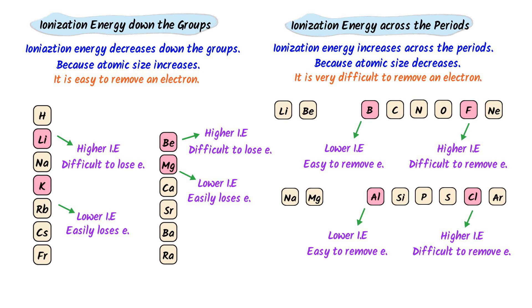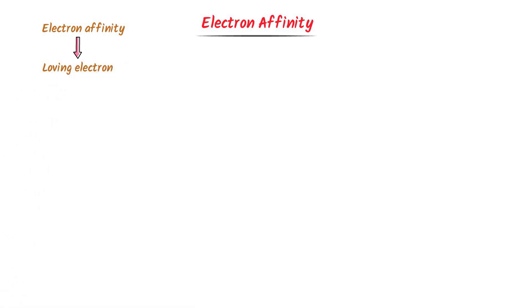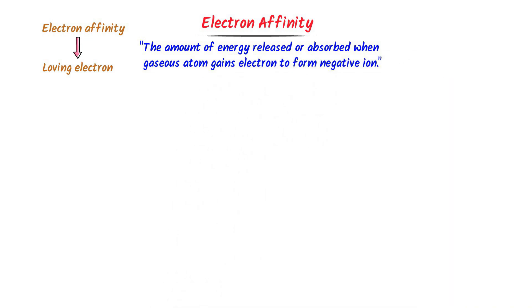Therefore, ionization energy increases from left to right across the period but decreases down the group. Now we will learn the periodic trends of electron affinity. Electron affinity means loving electrons. We define electron affinity as the amount of energy released or absorbed when a gaseous atom gains an electron to form a negatively charged ion. Remember this important point: metals do not want to gain electrons — metals like sodium, magnesium, and calcium lose electrons. While non-metals love to gain electrons, so non-metals like chlorine and oxygen always gain electrons.